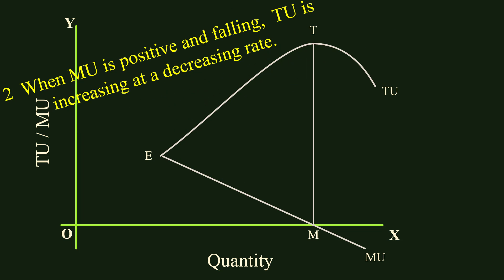Second relation: when Marginal Utility is positive and falling, Total Utility is increasing at a decreasing rate. In the segment EM of the Marginal Utility curve, Marginal Utility is positive and falling. So in the segment ET, Total Utility is increasing at a decreasing rate.